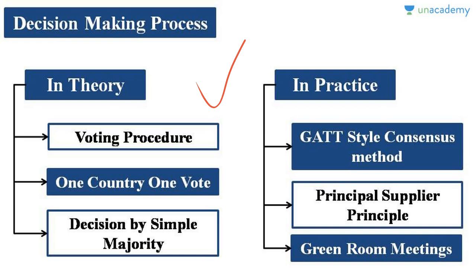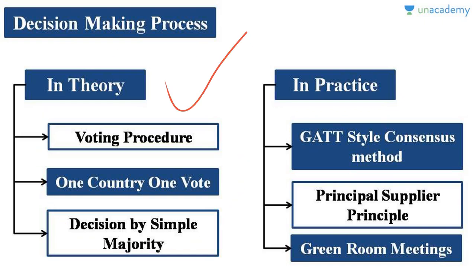In theory, WTO adopts a voting procedure — each country is given one vote, no matter whether it is rich or poor, developed or developing. Decisions should be taken by simple majority. Since two-thirds of WTO members are developing countries, if this method were adopted, no decisions against the interest of developing countries could be taken. However, this is not what happens in practice — WTO takes many decisions against the interest of developing countries.